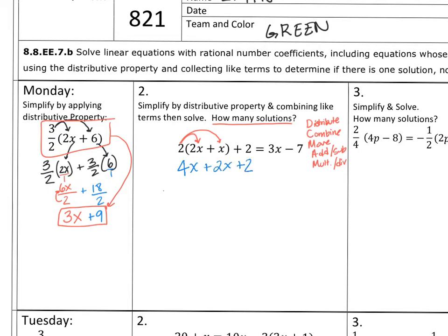Now there's nothing else to distribute. I'm going to bring down that plus 2. And that's going to equal 3x minus 7. Another thing that you might have noticed, I have 2x and I have x. I can actually combine that. That'll be 2x plus x and that'll be 3x inside. 2 times 3x would be 6x.